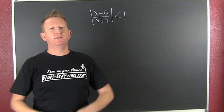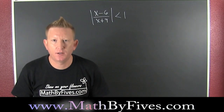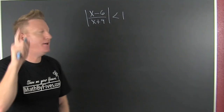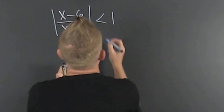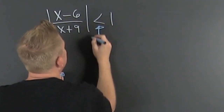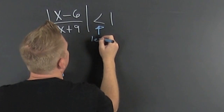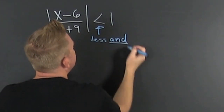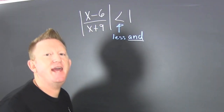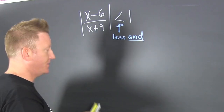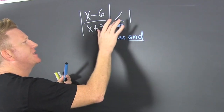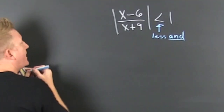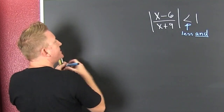Absolute value rational inequalities. There's a bunch going on here. First thing we see — and we need to make clear — this is less than. That's what it says. This is less than that. Well, that breaks up into two cases.